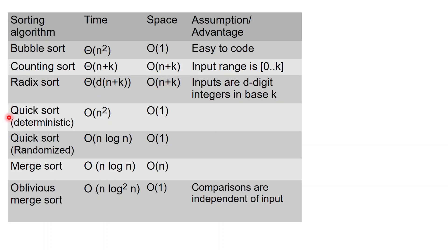Then we saw quicksort, which comes in different flavors depending on whether you pick the pivot deterministically or with a randomized procedure. If you pick the pivot deterministically, then the time can be as bad as O(n²). The space is always constant, so in the worst case it's pretty much the same as bubble sort. However, if you pick the pivot randomly every time, you can guarantee that the number of comparisons will be O(n log n) and the space will be constant — so it has constant space like bubble sort but is much faster.